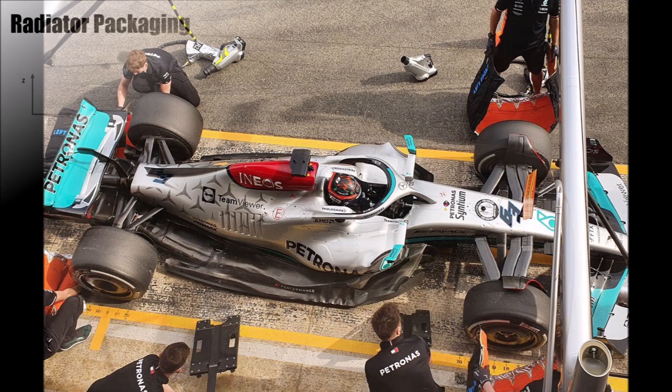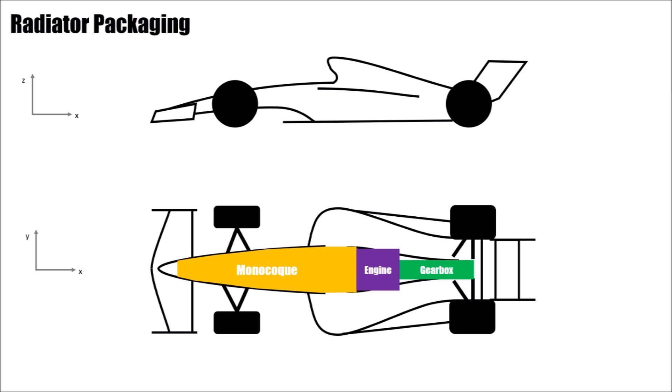If you design a Formula 1 car, you have a monocoque, engine and gearbox mounted directly to the monocoque right behind it and radiators at the side. Additionally, in modern Formula 1 cars, you have the fuel tank integrated into the monocoque and the high voltage battery underneath the fuel bladder.